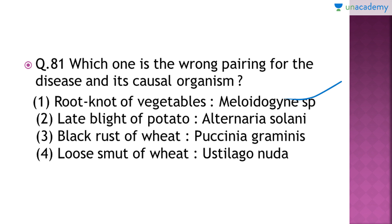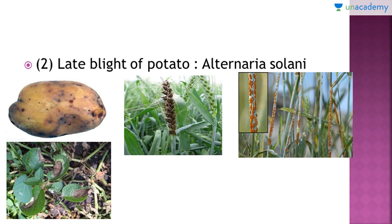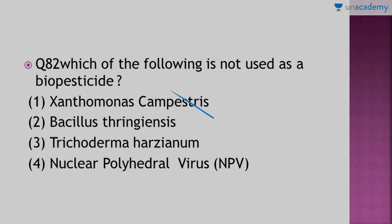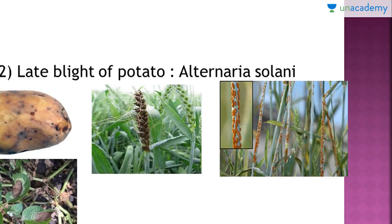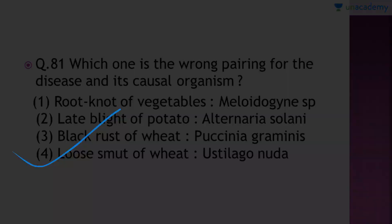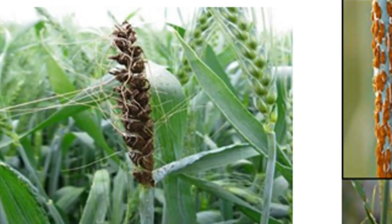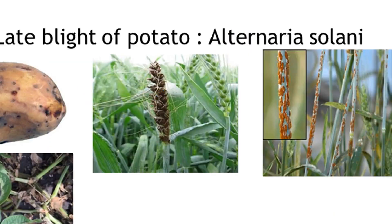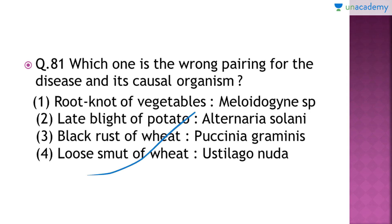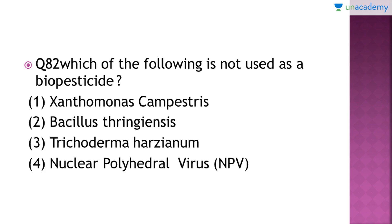Black rust of wheat shows a black part on the wheat plant. Loose smut of wheat is caused by Ustilago nuda — the structure of wheat becomes loose, hence it's called loose smut. All three of those options are correct; only the second one is wrong. Late blight of potato is caused by Phytophthora infestans, not Alternaria solani.